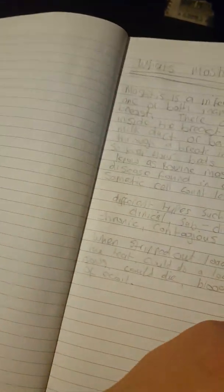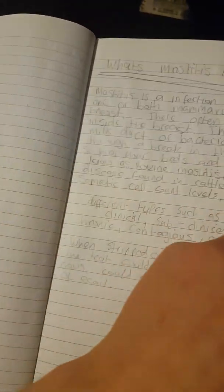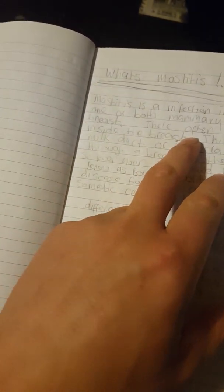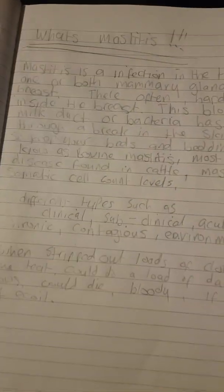So basically mastitis is an infection in the tissue of one or both mammary glands inside the breast. They're often hard and sore inside the teat.